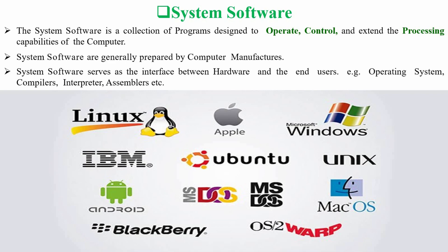System software is a collection of programs designed to operate, control, and extend the processing capabilities of a computer. System software is generally prepared by computer manufacturers, and it serves as an interface between the hardware and the end users.